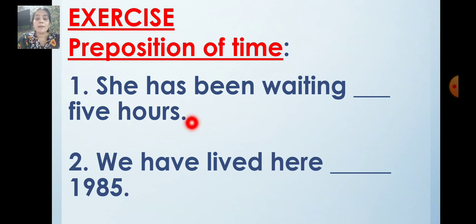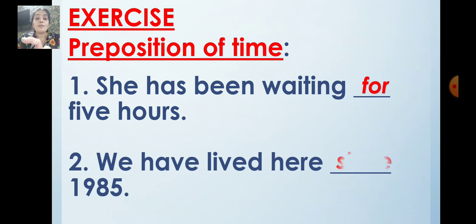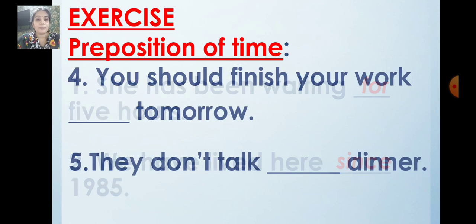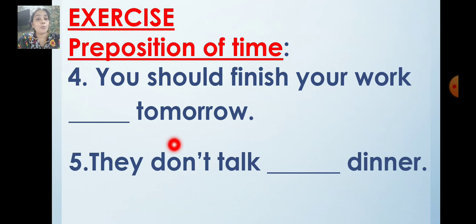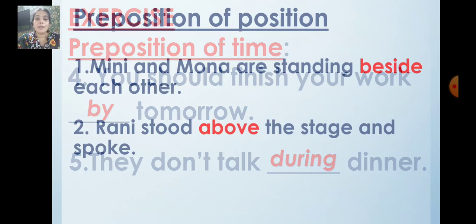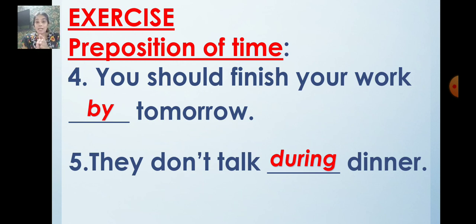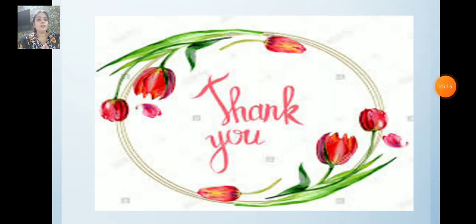Now let's do some exercise. She has been waiting dash five hours — she has been waiting for five hours. We have lived here dash 1985 — we have lived here since 1985. You should finish your work dash tomorrow — you should finish your work by tomorrow. They don't talk dash dinner — they don't talk during dinner. So children, let's stop here. We will continue the rest of the preposition words in the next class. This topic will be continued in the next video. Until then, stay home and learn. Bye-bye children.